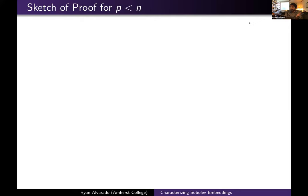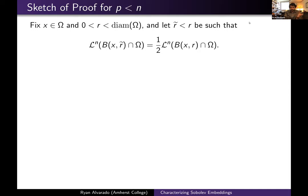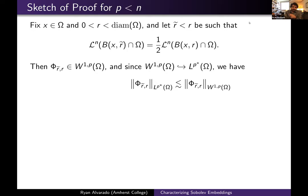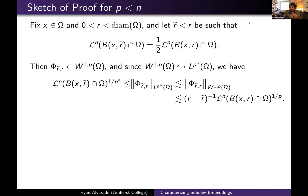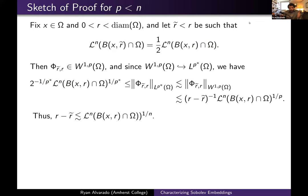For p < n: since we have a C-infinity compactly supported function, it belongs to W^{1,p}. Since we're assuming W^{1,p} embeds into L^{p*}, we have the embedding inequality. We bound the left side from below by shrinking to the smaller ball where phi equals one, and bound the Sobolev norm above using gradient estimates. This gives r-tilde on the left and r on the right, and we use the measure condition to rewrite the left side in terms of the measure of the ball with radius r.